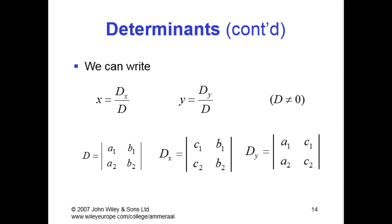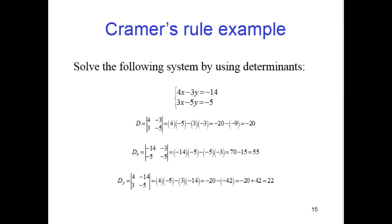So let's, I want to just go over one, a specific example with, you know, plugging in numbers for the coefficients. So let's say we have this system of equations, 4x minus 3y equals minus 14, 3x minus 5y equals negative 5.